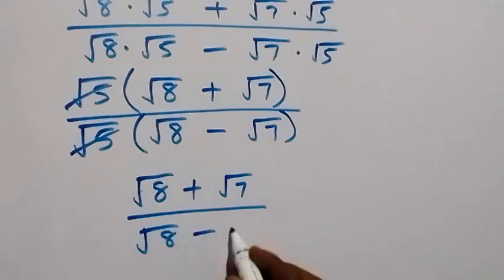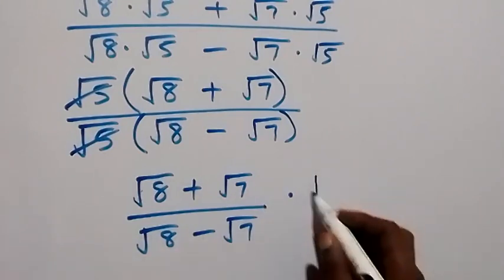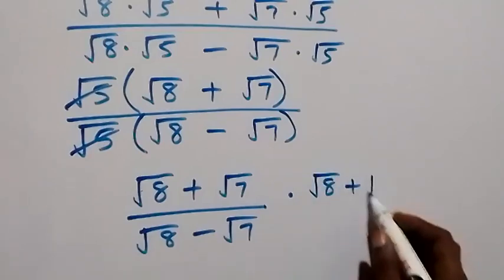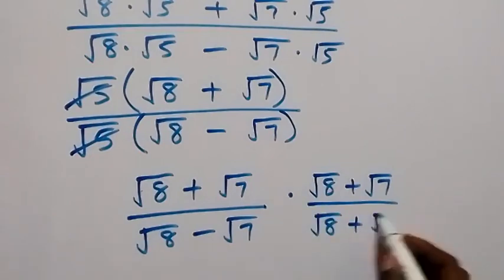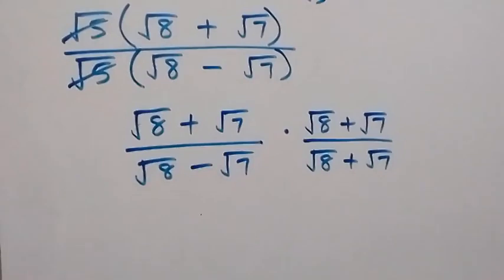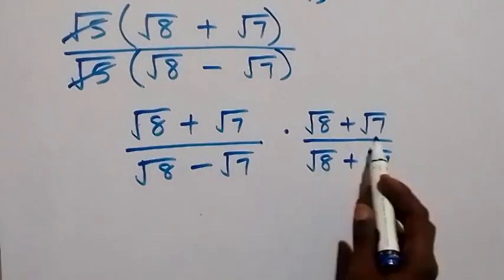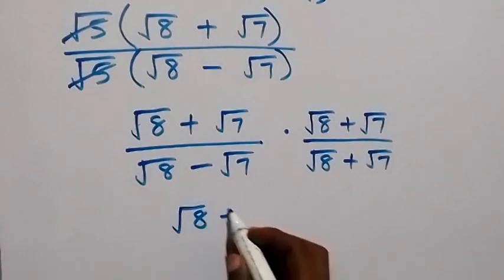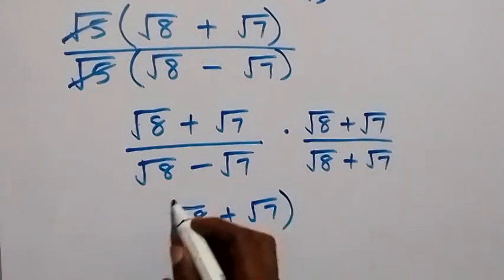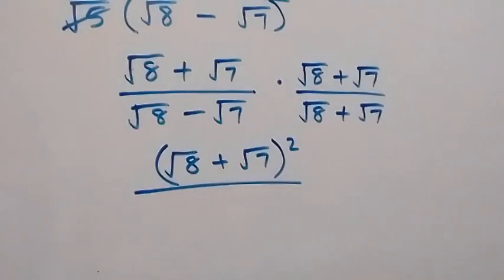From here, let's rationalize this and multiply with the conjugate of the denominator, which is root 8 plus root 7, divided by root 8 plus root 7. So we multiply and divide by the conjugate. This gives us root 8 plus root 7 squared in the numerator, and in the denominator it follows the difference of squares pattern.